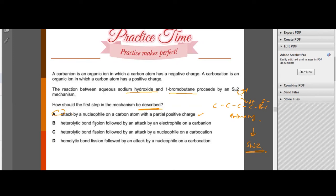Why is B not correct? Heterolytic bond fission followed by an attack by an electrophile on a carbon ion. This is wrong. The heterolytic fission does not occur at the first step. So this is very wrong as well. Also, not homolytic fission since it is not the free radical substitution, right? No UV light present as well. So A is the answer.